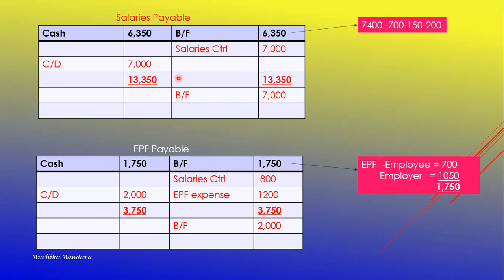When you balance the control account, you get the carried down and brought forward — that balance carries into April. EPF employer contribution for March is 1,200. Double entry: debit EPF expense, credit EPF payable. When simplified, you carry down the brought forward of 1,200 plus 800, since the last month's amount has already been settled.